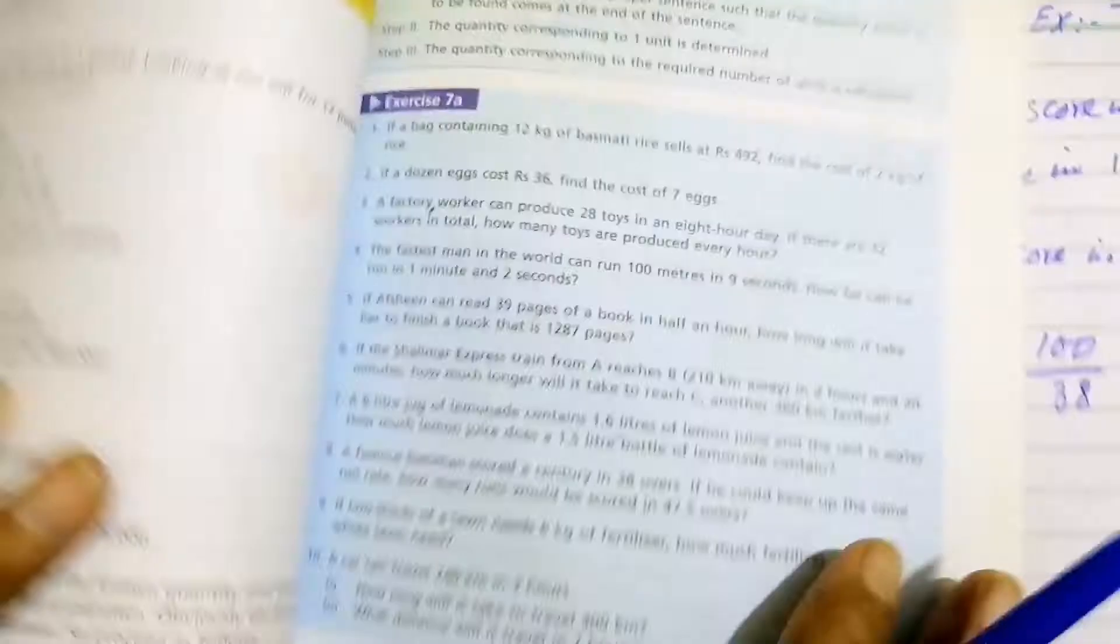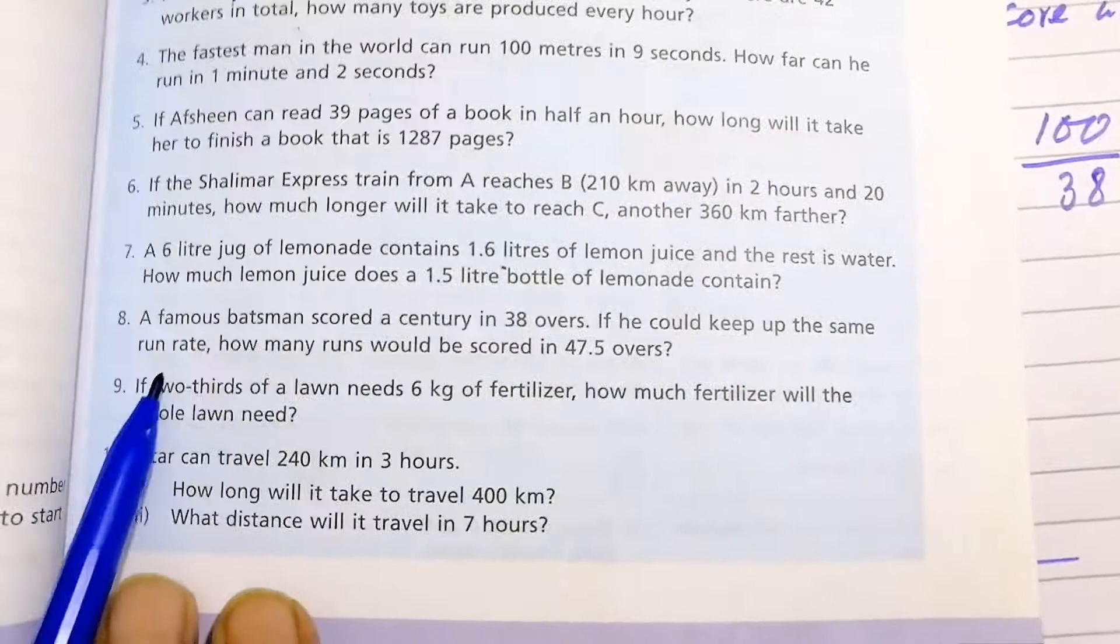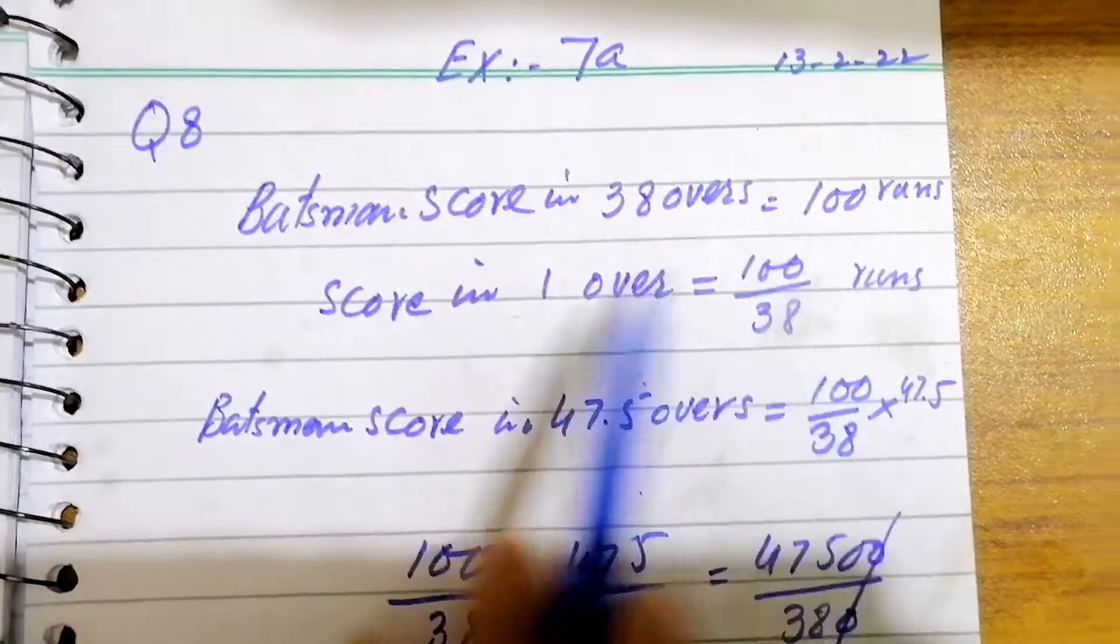Question number 8: a famous batsman scored a century in 38 overs. If he could keep up the same run rate, how many runs would be scored in 47.5 overs? A batsman scores in 38 overs 100 runs, then score in 1 over is 100 over 38 runs. Batsman scores in 47.5 overs: 100 over 38 multiplied by 47.5.